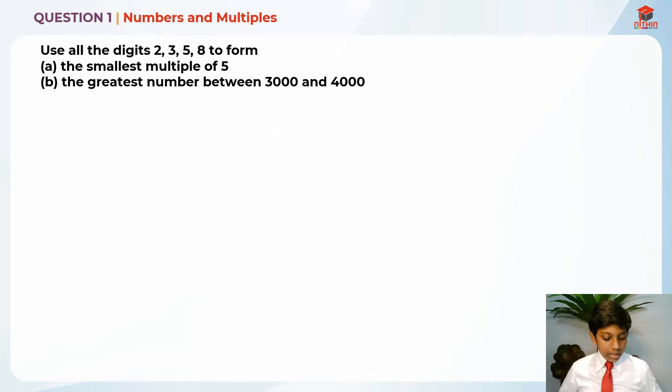So let's highlight the key information: the smallest multiple of 5. And we must use all the digits.